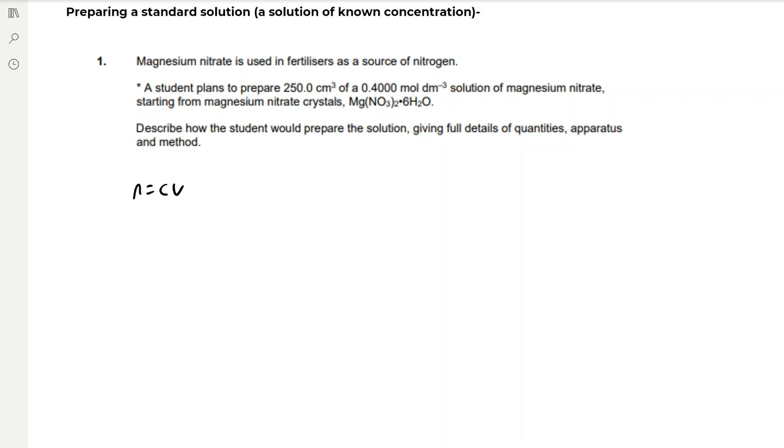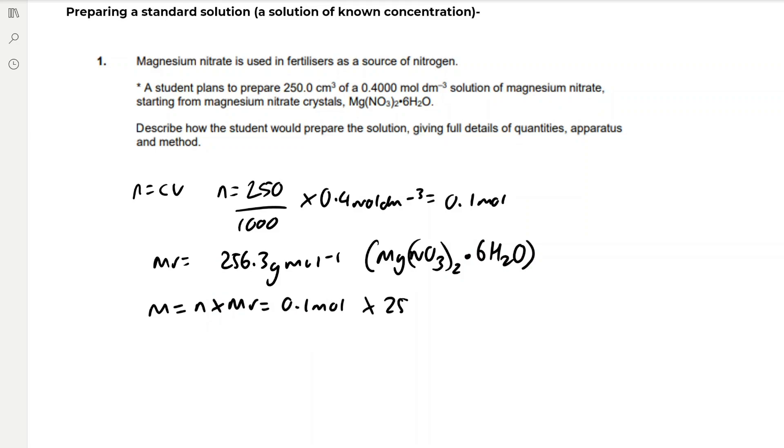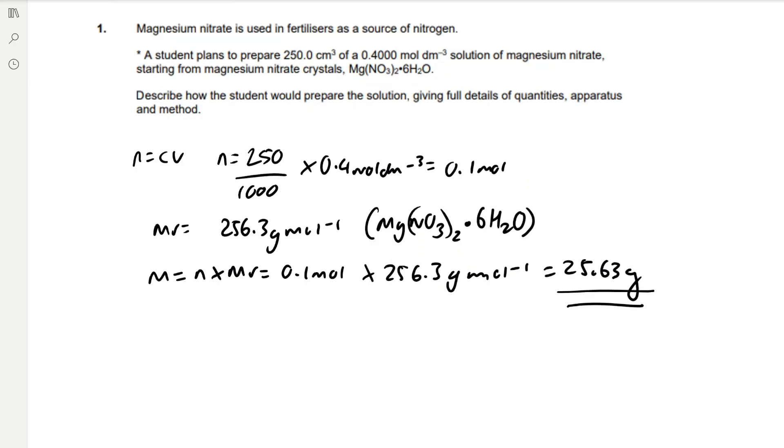Use the formula N equals CV, so moles is equal to 250 over 1000 to convert to decimetres cubed, multiplied by the concentration, which is 0.4 mole per decimetre cubed, which gives us 0.1 mole of magnesium nitrate crystals. And then we have a molar mass of 256.3 grams per mole for our hydrated magnesium nitrate. If we calculate the mass, that's equal to the moles times the MR, which is 0.1 moles times 256.3 grams per mole, which gives us 25.63 grams. And that's the mass that we'll use to get our standard solution.